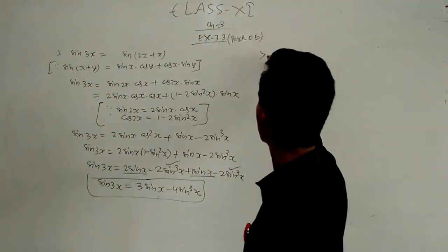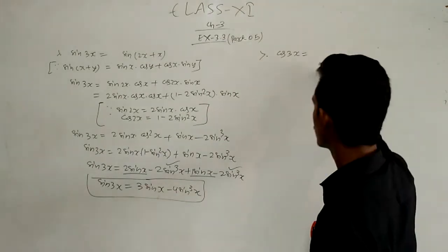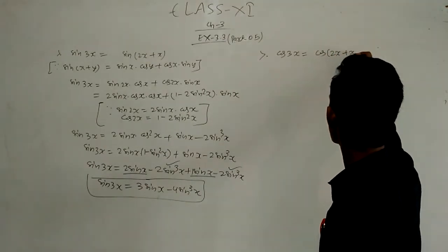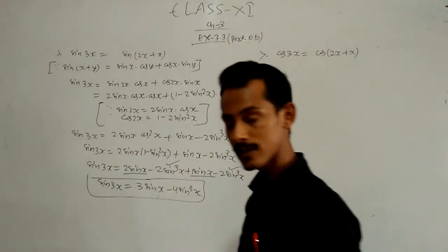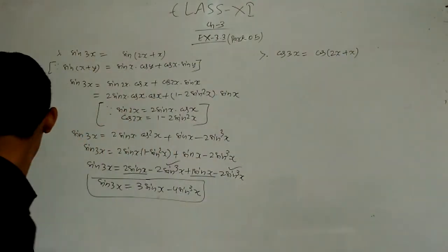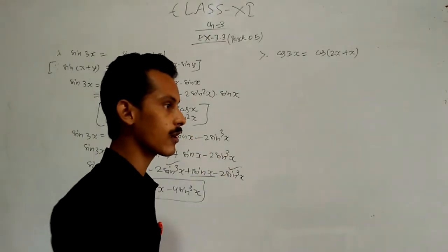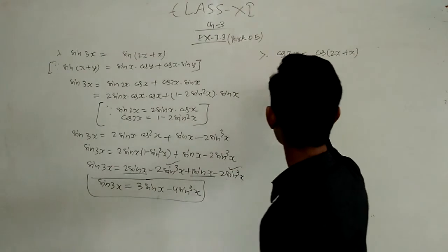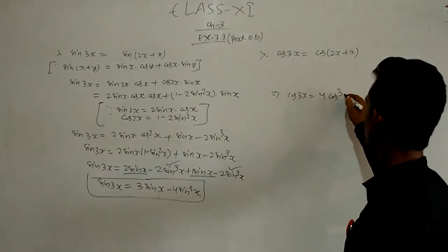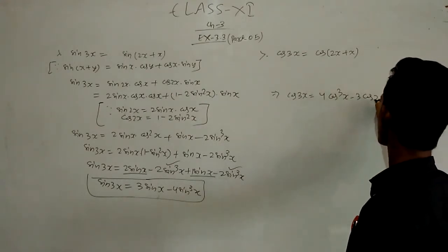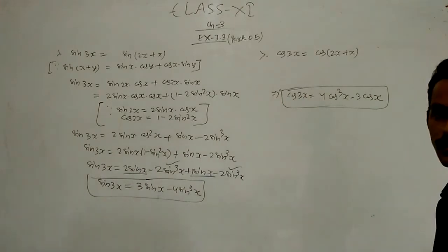In the same pattern, you can derive the formula for cos 3x. Write cos 3x as cos(2x + x), expand it using the cos(x + y) formula, substitute the value of cos 2x, and when you solve it you will get cos 3x = 4cos³x − 3cos x.